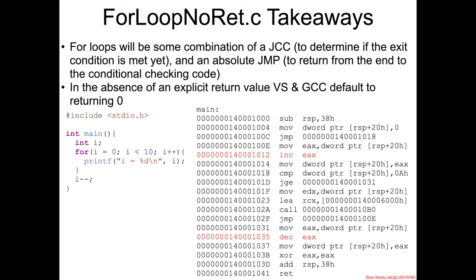The takeaway for 'for loop no ret' is that 'no ret' refers to the fact that if there is no return value, the compiler will just insert a default of zero for you.